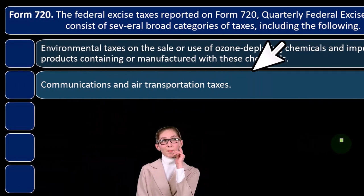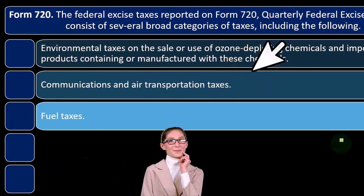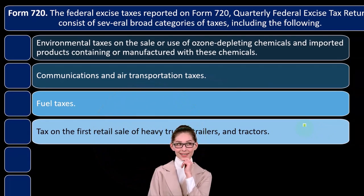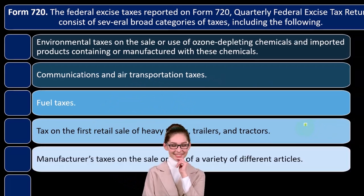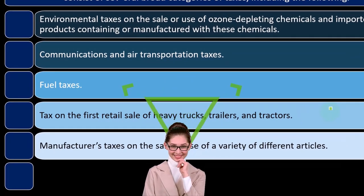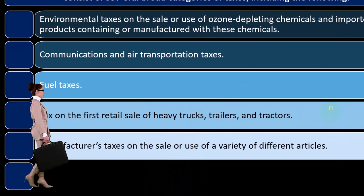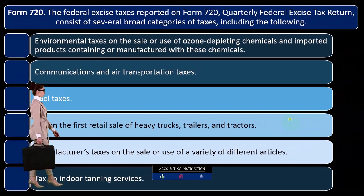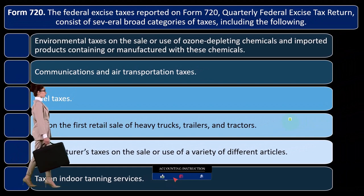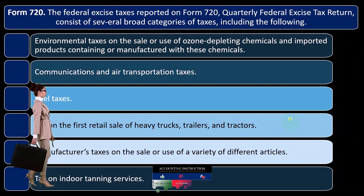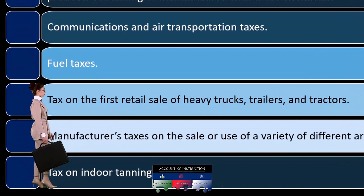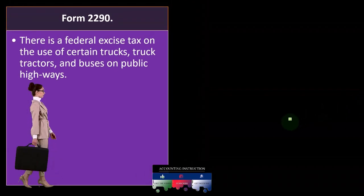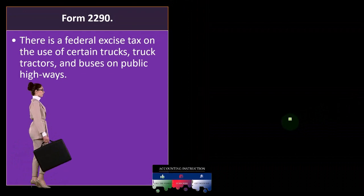Other Form 720 categories include communications and air transportation taxes, fuel taxes, tax on the first retail sale of heavy trucks, trailers, and tractors, manufacturers taxes on the sale or use of a variety of different articles, and tax on indoor tanning services. I'm not sure exactly why that is — maybe it's because the tanning machines have some kind of bad environmental effect.